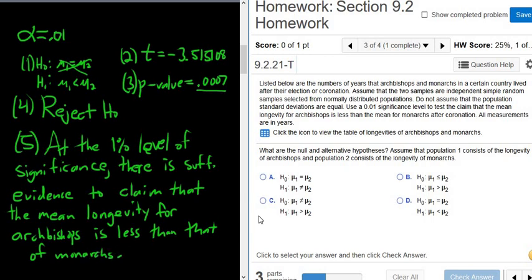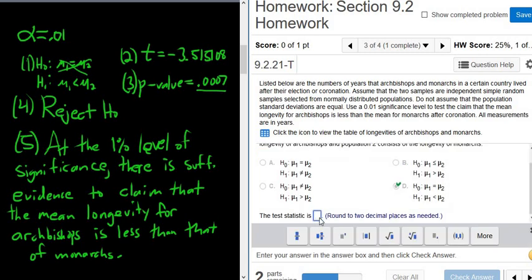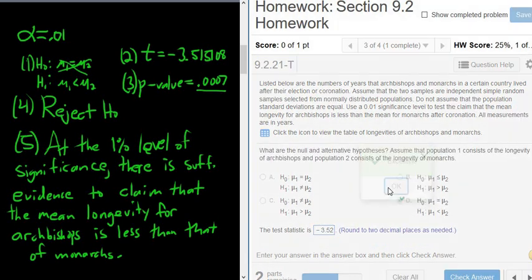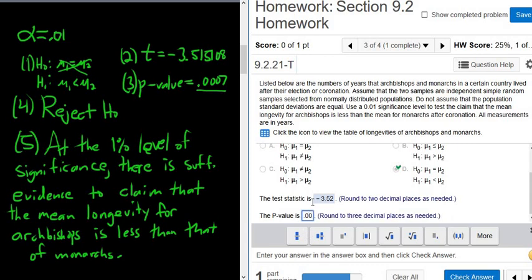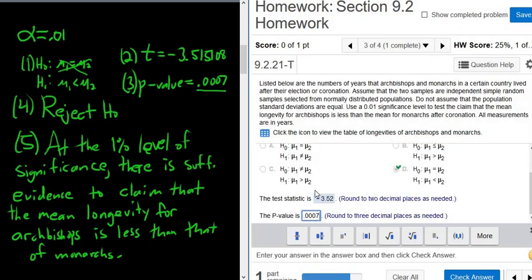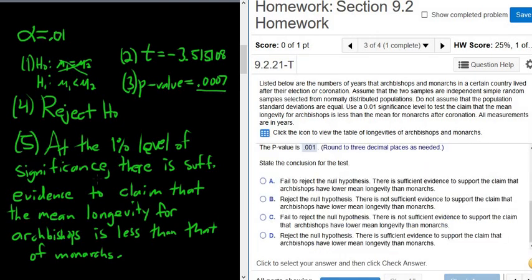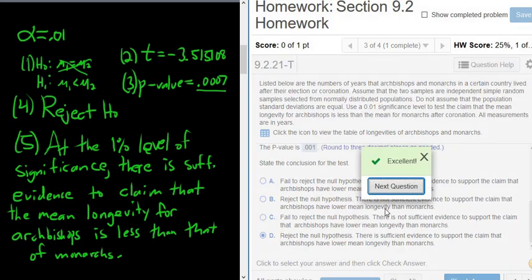All right, now we can answer all of the questions. So it looks like it's less than. Good stuff. And then test statistic, it wants two decimals, so it's going to be negative 3.52. And then the p-value, really small p-value, 0.0007. Very small, so we're definitely going to reject. It wants three decimals, see? Very easy to mess up. So three decimals would be 0.001. There we go. And we said we rejected, so there is sufficient evidence. So it's going to be the last one. Reject the null hypothesis. There is sufficient evidence to support the claim that archbishops have lower mean longevity than monarchs. And that's it.